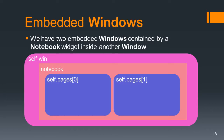Here's what it looks like in memory. We have self.win, which is a TK Entertoy window, and it has one widget — the notebook — but the notebook contains two windows itself: self.pages[0] and self.pages[1]. So the windows are inside a widget which is inside another window. This is what you call embedded windows.